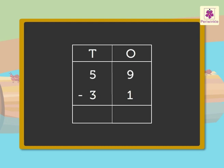We always subtract the 1s first and then the 10s. 9 minus 1 is equal to 8. 5 minus 3 is equal to 2. Thus, the difference of 59 and 31 is 28.